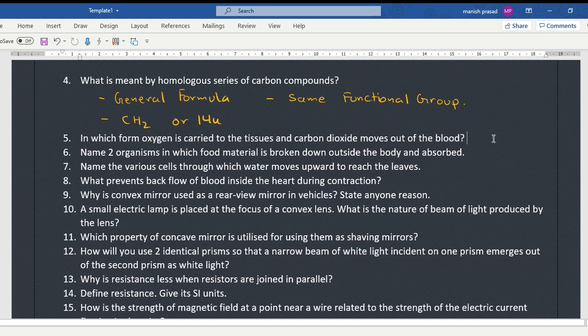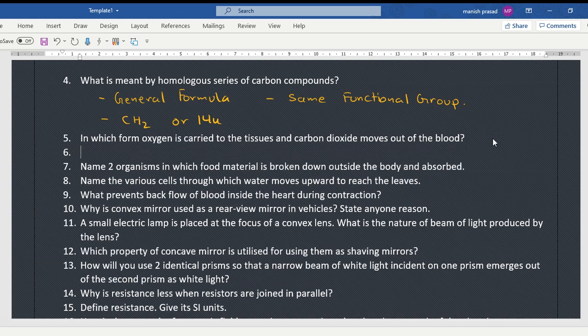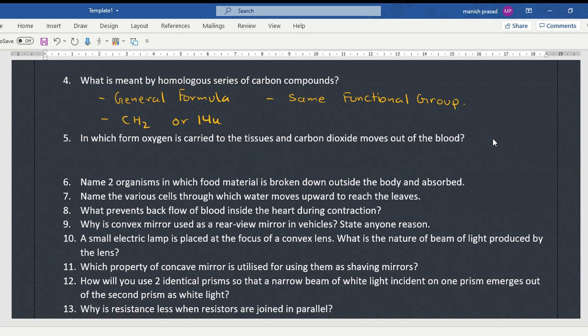In which form oxygen is carried to the tissues and carbon dioxide moves out of the blood? Sir, I have put oxygen on the blood. Oxygen, oxyhemoglobin and carboxyhemoglobin. Exactly. Oxyhemoglobin and carboxyhemoglobin. Exact answer. Okay. So carbon dioxide moves out as carboxyhemoglobin. Okay. And the hemoglobin spelling, that's the American spelling. Okay. Before anyone tells me, sir, the hemo in the book is h-a-e-m-o.